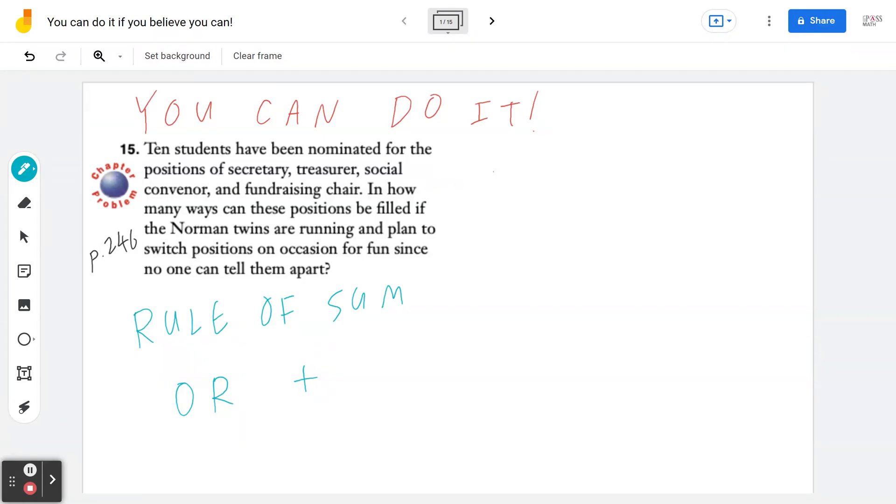The reason why we're applying the rule of sum is because we recognize there are three cases. So let's write them down, then we'll write down the math. There are three cases to consider. Case one is going to be both twins are elected.